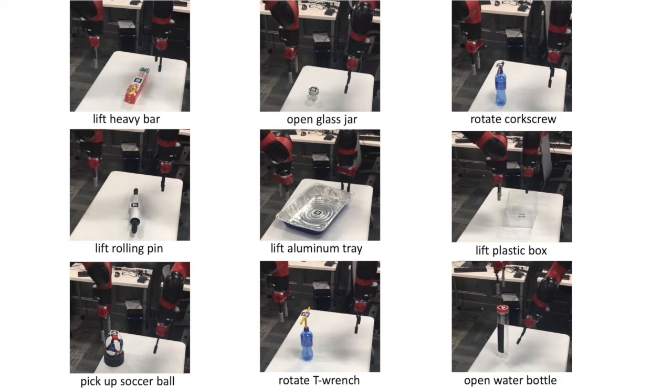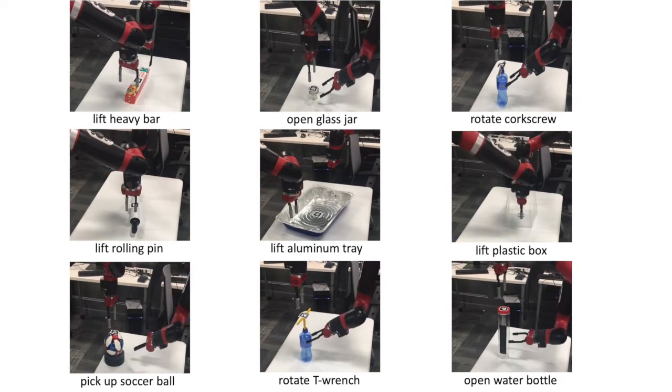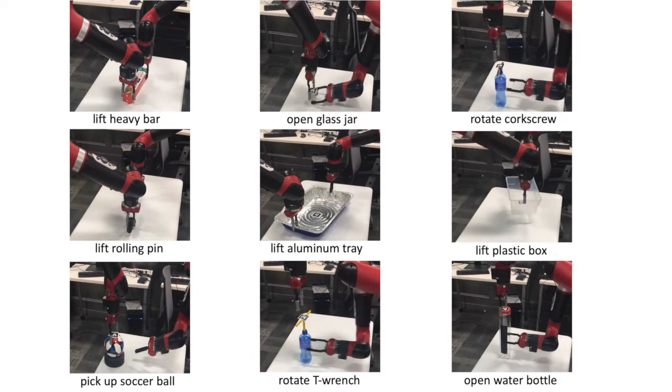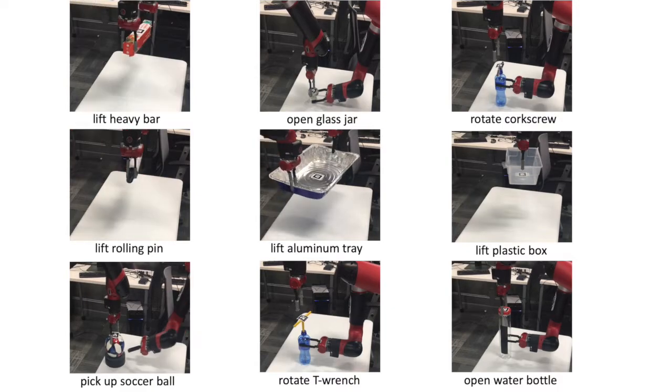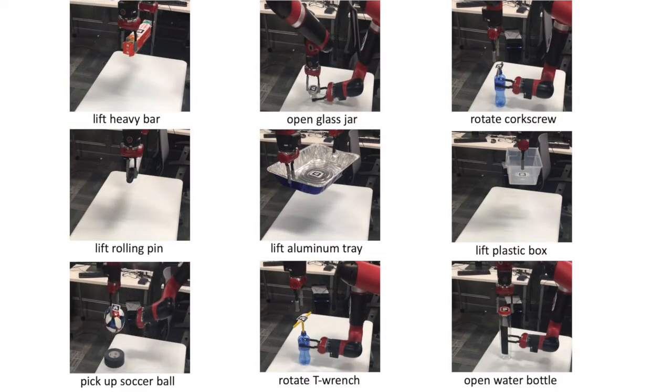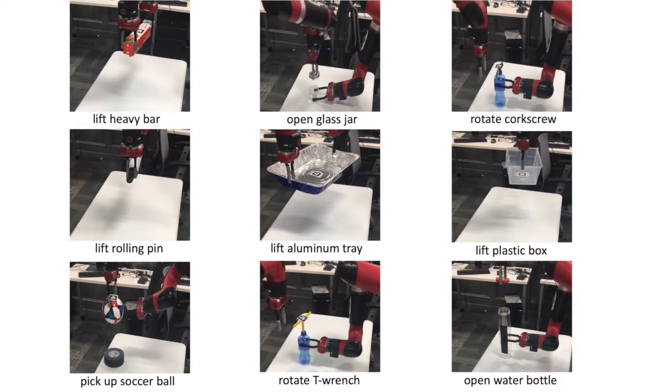We address the problem of effectively composing skills to solve real-world sparse reward tasks via reinforcement learning. Our approach learns policies for bimanual manipulation tasks, as shown, from raw RGB image observations.